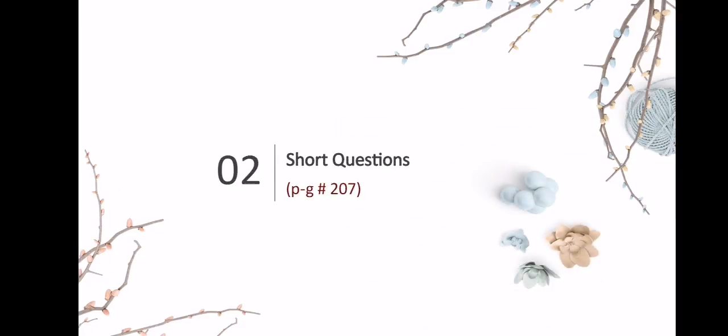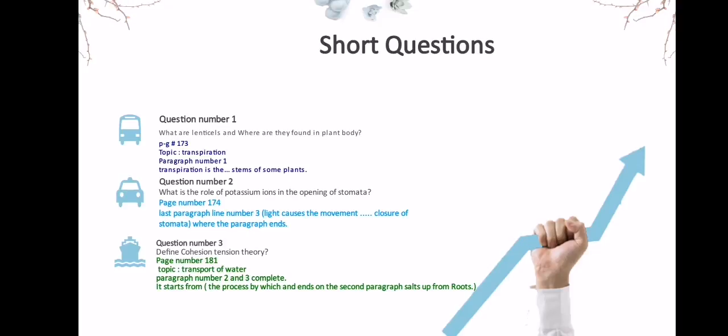Short question answer number 1: what are lenticels and where are they found in the plant body? You can find the answer on page 173 under the topic transpiration, paragraph number 1 — the paragraph starts from 'transpiration is the' and ends at 'stems of some plants.' For question 2 — what is the role of potassium ions in the opening of stomata — the answer is on page 174, last paragraph, line 3, which starts from 'light causes the movement' and ends at 'closure of stomata.' For question 3 — define cohesion tension theory — the answer is on page 181, topic 'transport of water,' paragraphs 2 and 3 complete, starting from 'the process by which' and ending at 'salts up from the roots.'